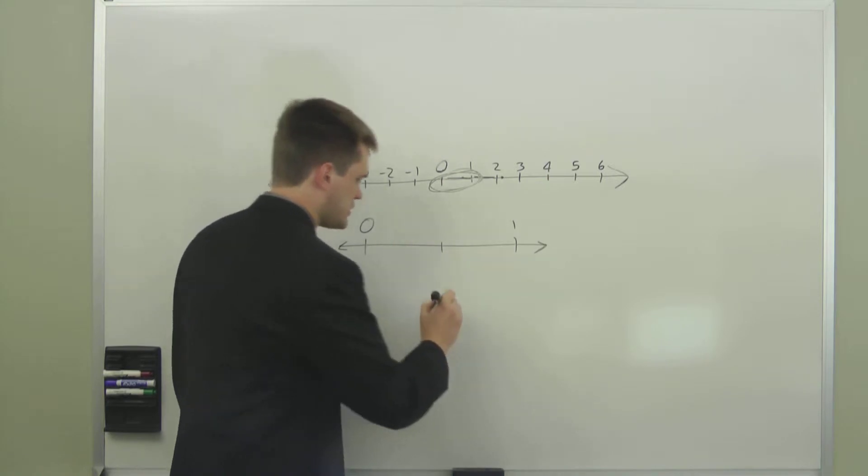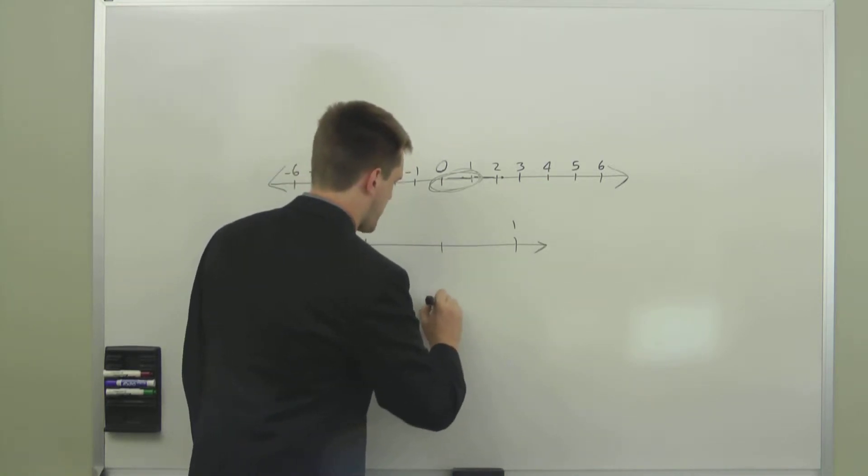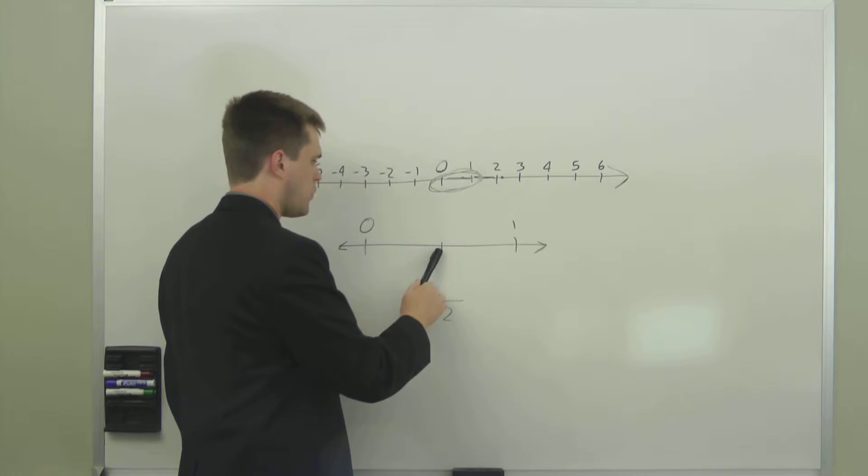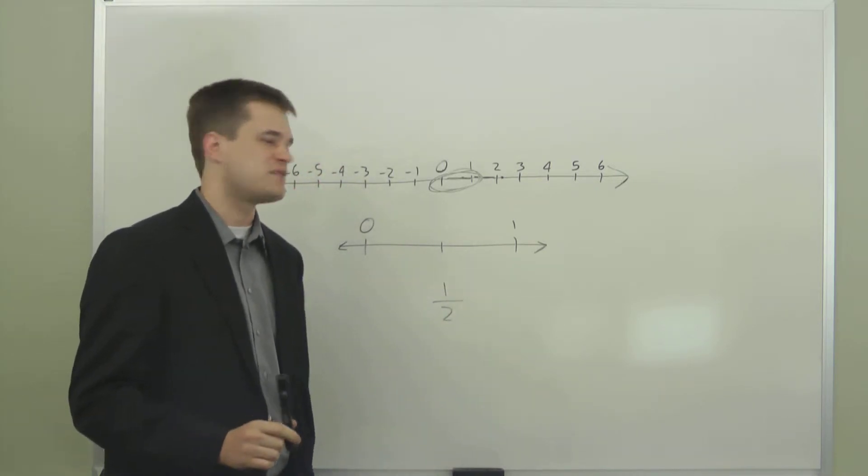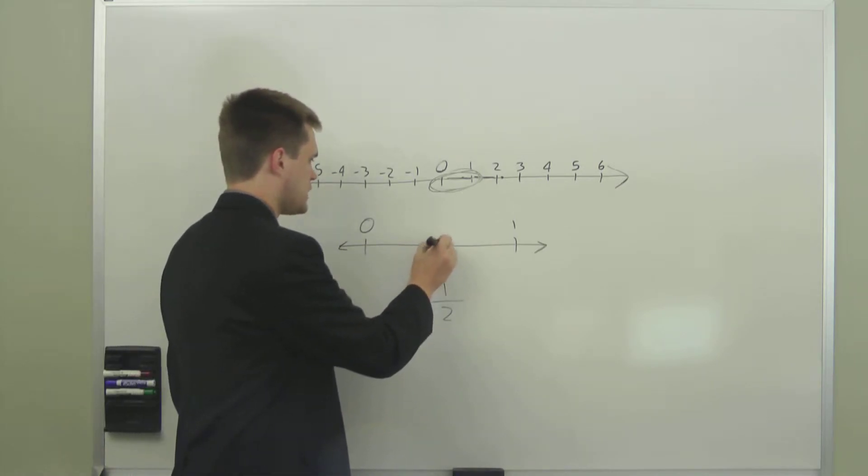Two pieces, so we have a two on the bottom of our fraction. If we just go one of those two pieces, we have one over two, or one half. That is what this point here is.